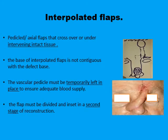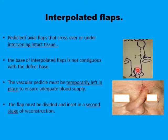Interpolated flaps are usually axial flaps — occasionally in very vascular areas like the retroauricular area, you can have a random pattern of interpolated flaps to reconstruct defects in the auricle. The main thing about interpolated flaps is that the base of the flap is distant from the defect, and the flap with its pedicle has to cross over, or sometimes under, a bridge of intact tissues between the base of the flap and the defect.